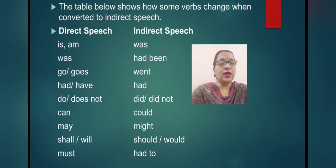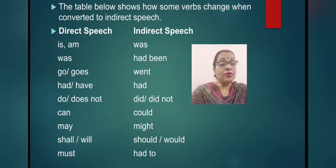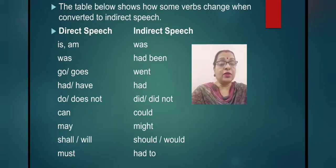First, in direct speech we have inverted commas — that has to be removed in indirect speech. If the reporting verb is in the present tense, then there will be no change in the subordinate clause. But if the reporting verb is in the past tense, we have to change the verb in the subordinate clause according to the table.